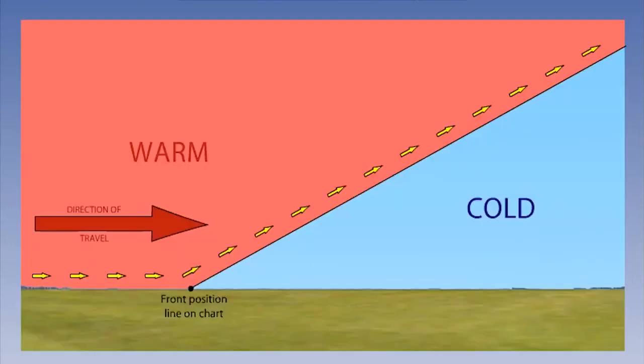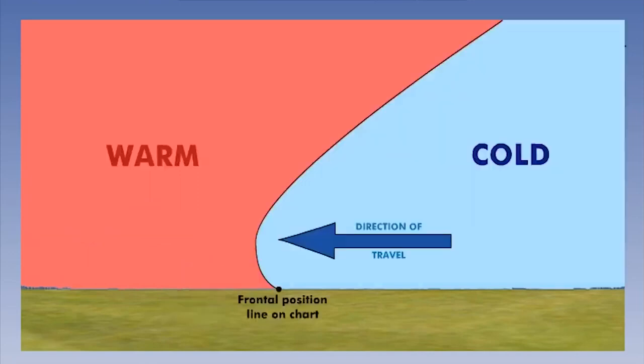Fronts are called warm or cold, depending on whether warm or cold air is spreading across an area behind the particular frontal boundary. For example, this is a warm front moving from left to right. If the front changes direction for any reason, which on occasion does happen, it becomes a cold front.